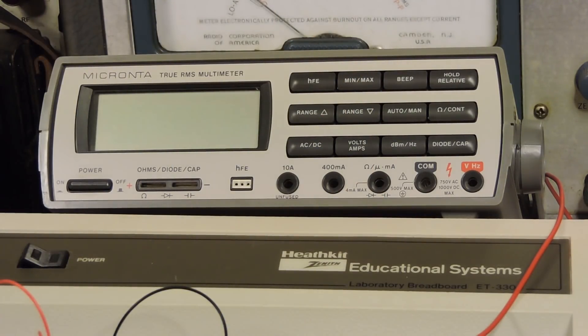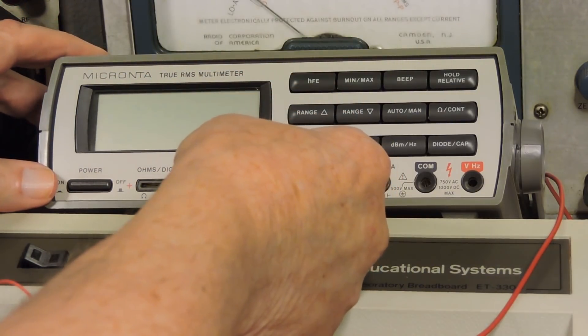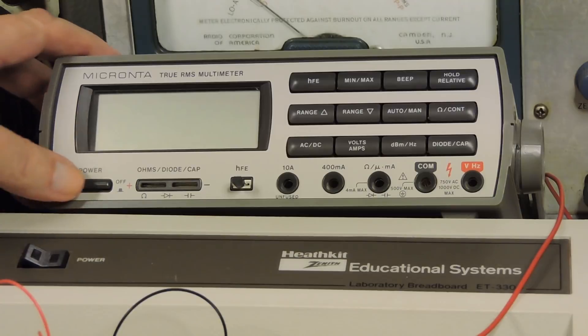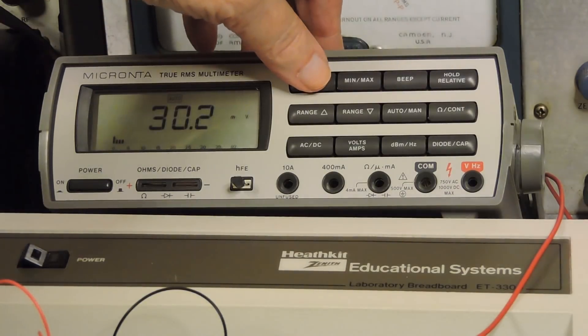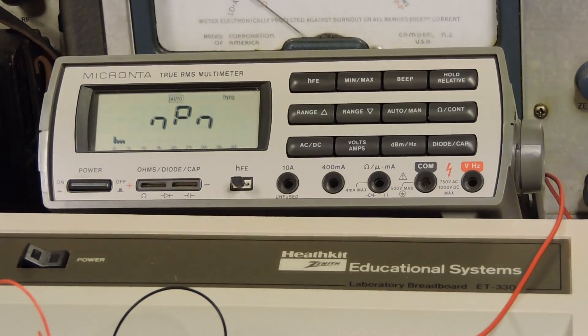Okay, this next one is a BC547C. NPN, EBC. Notice that that's different than the first two. And about 450 as a beta.